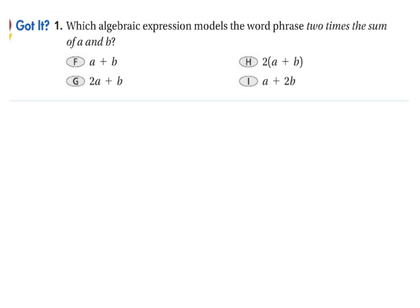Another example, the same type of question: which algebraic expression models the word phrase two times the sum of A and B? So we've got the sum of A and B multiplied by 2, so that would be option H, 2 times the quantity A plus B.